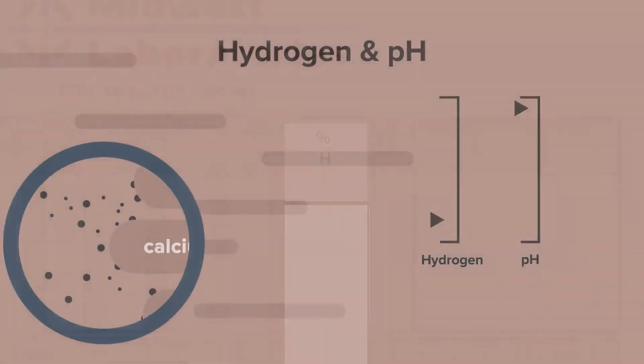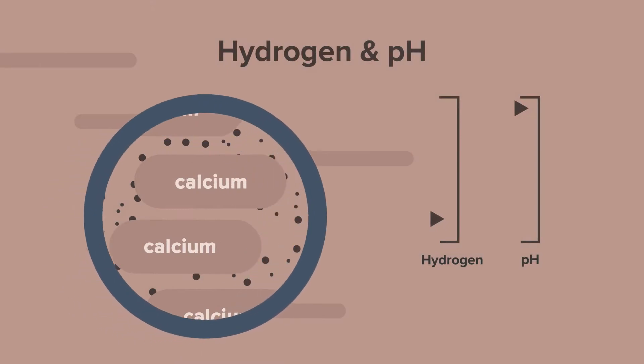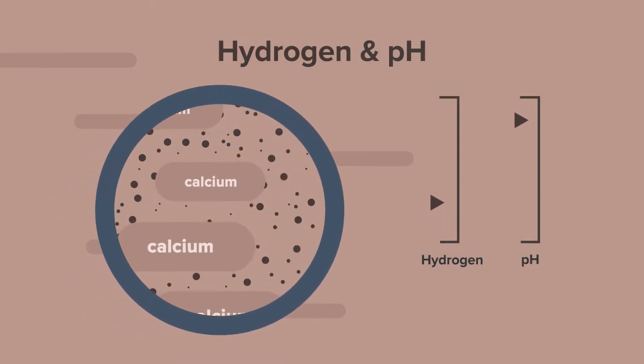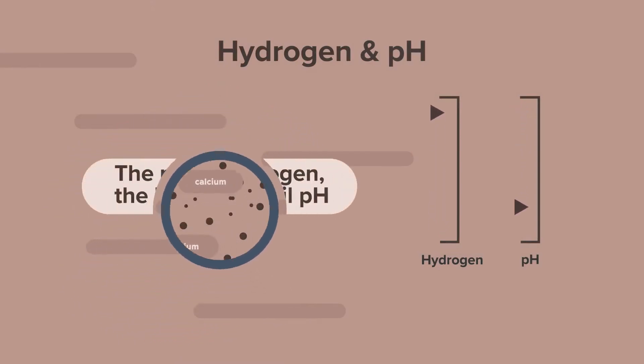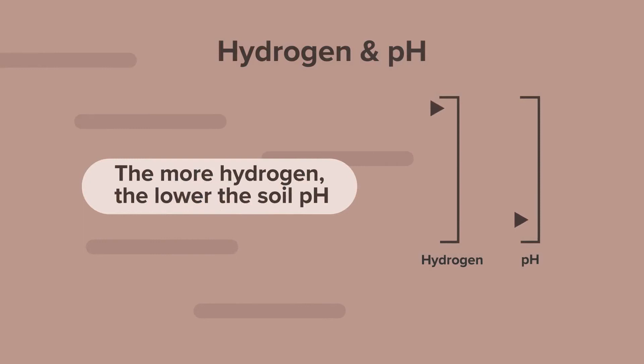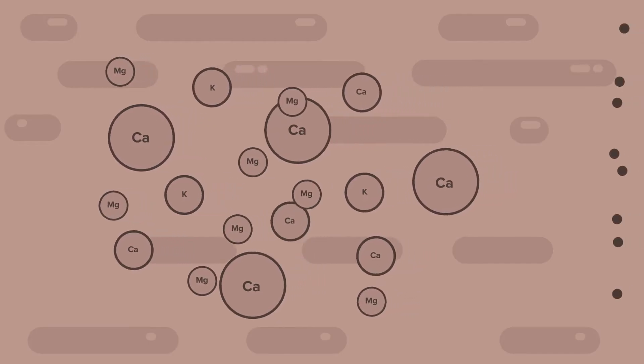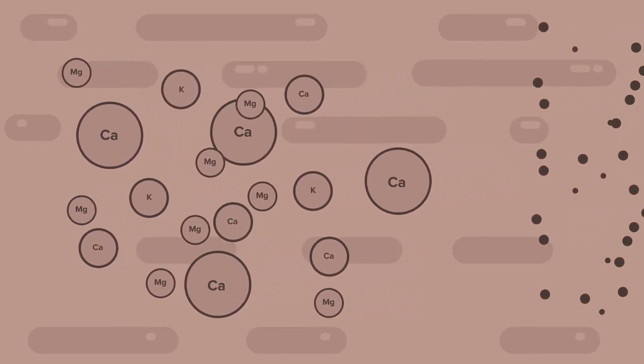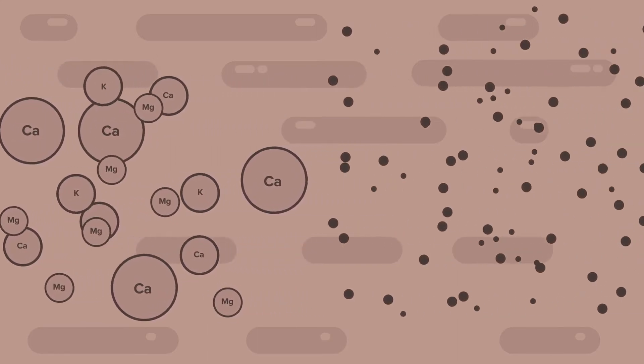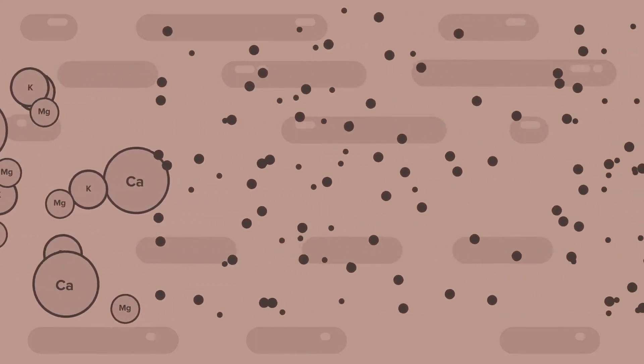Hydrogen is going to directly affect our soil pH. The more hydrogen that we have on the percent-based saturation, the lower our soil pH is going to be. If you've got low pH, you're going to have excess hydrogen. That typically means it strips something else — calcium or magnesium, possibly potassium. So hydrogen is displacing another cation, one that is more needed.